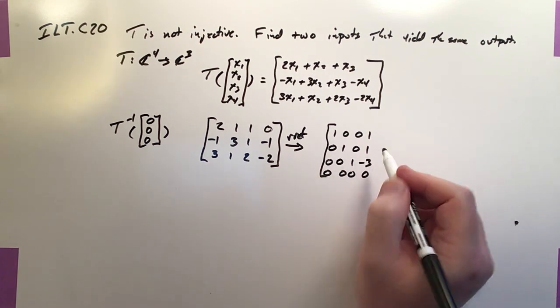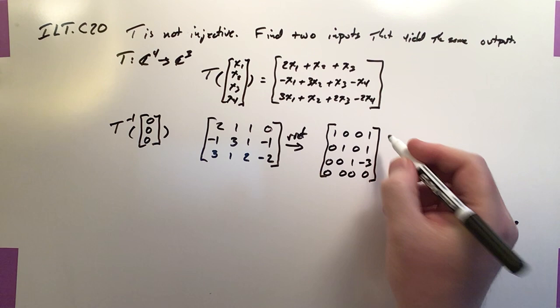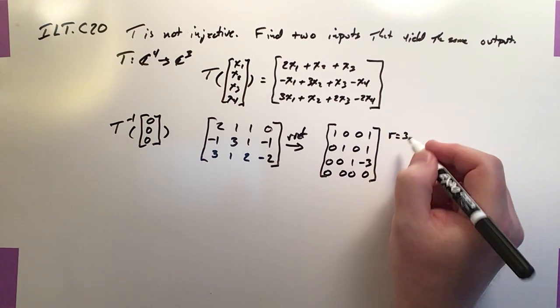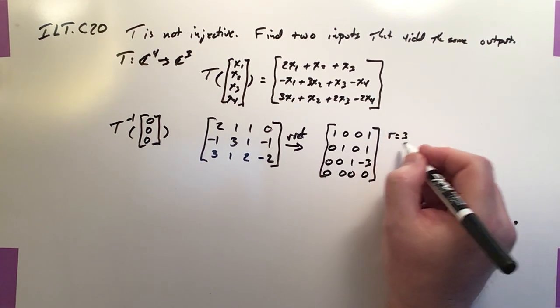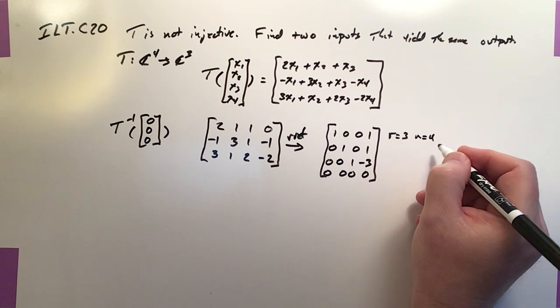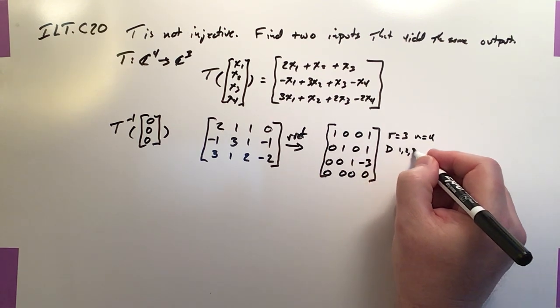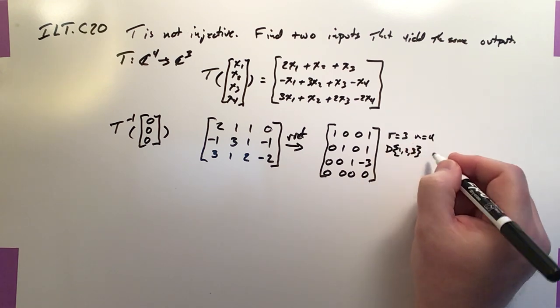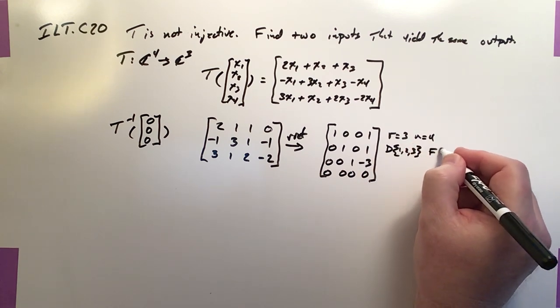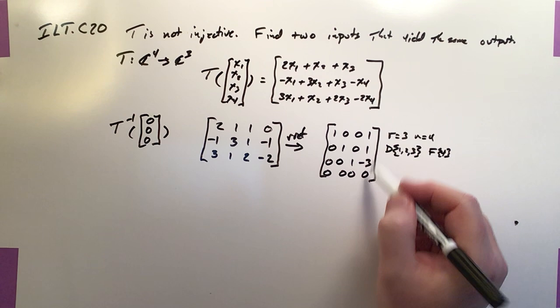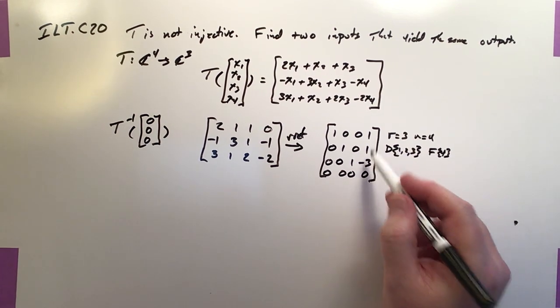So X4 basically is our free variable. We've got R equals 3. We've got three pivot rows. N equals 4. And our pivot rows are 1, 2, and 3. And our free row is 4. And that's okay. Again, this is not out of bounds.